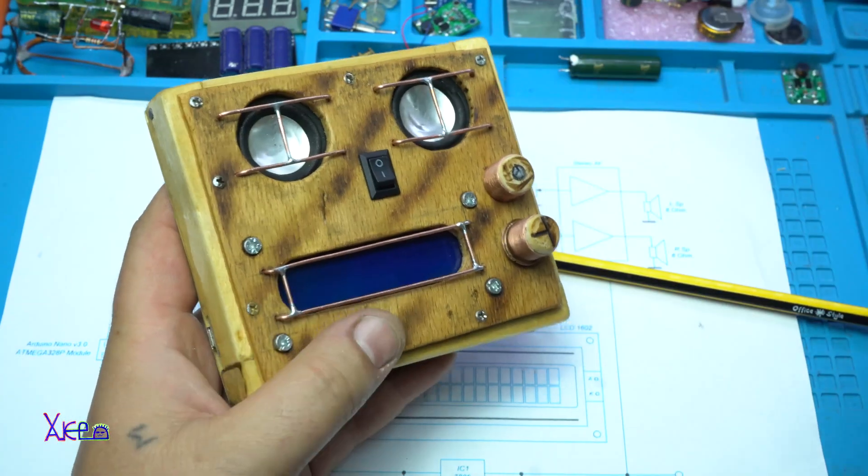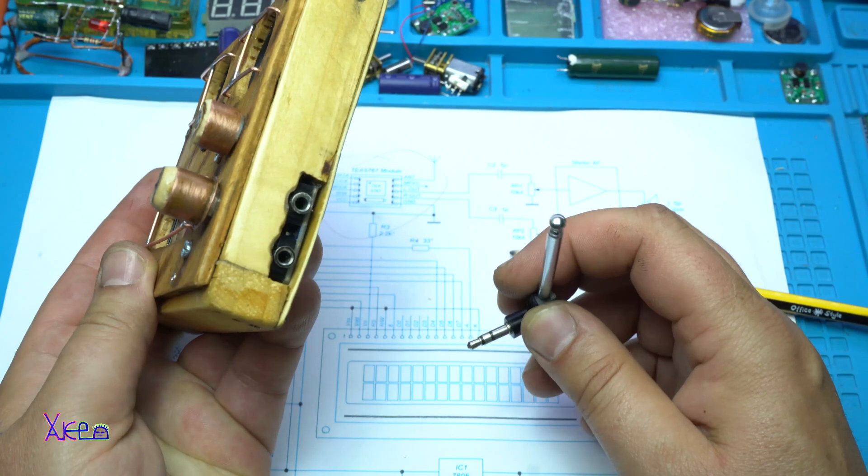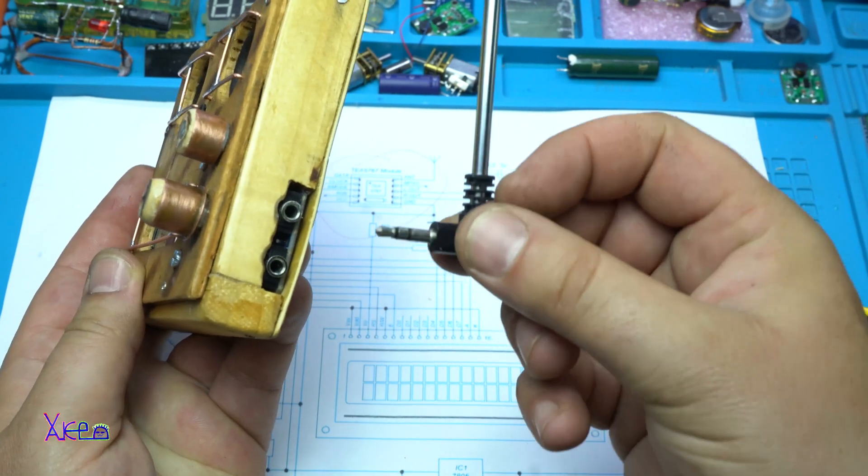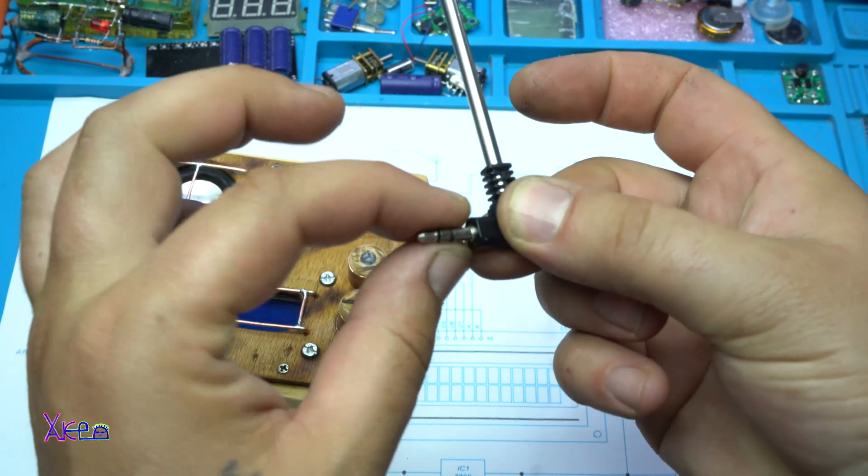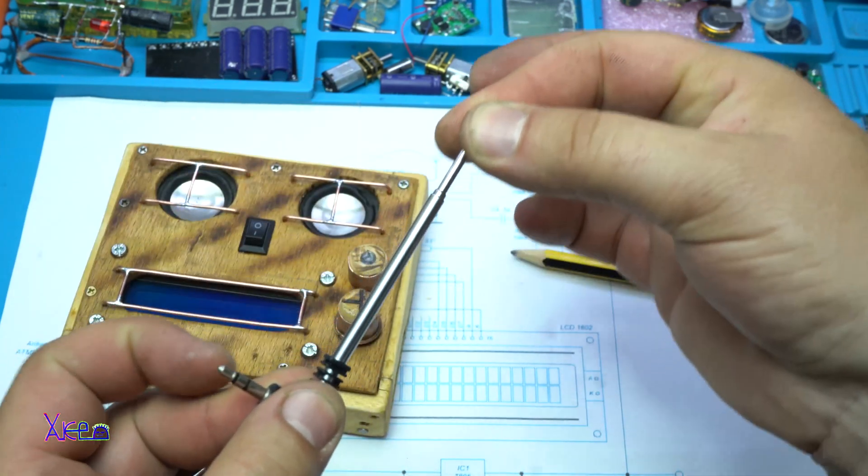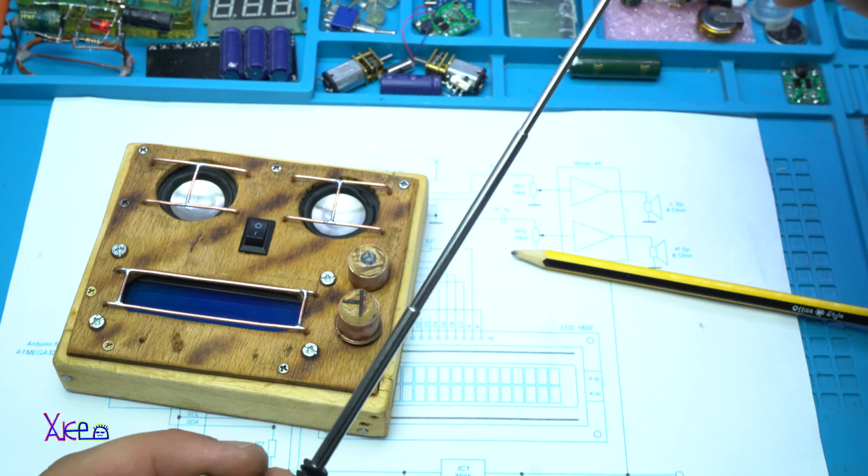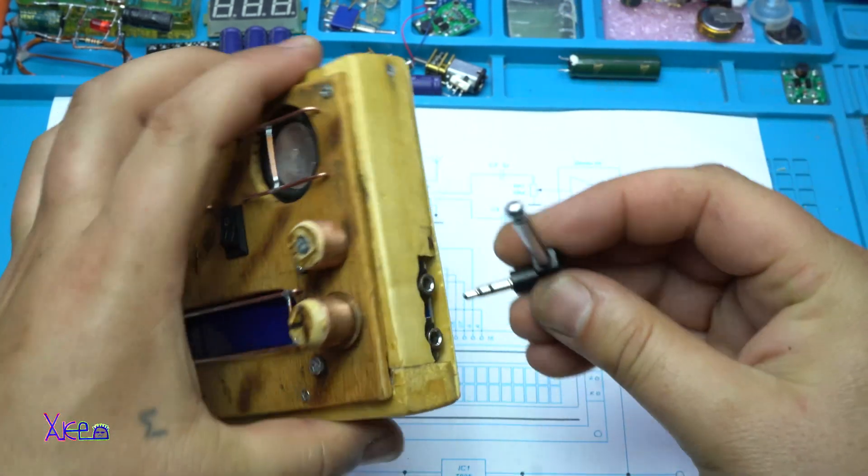And not to forget, with the radio module comes a small 3.5mm jack cable. From one side and the radio antenna from the other side, you can plug it right here.